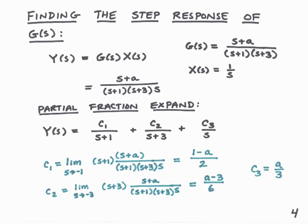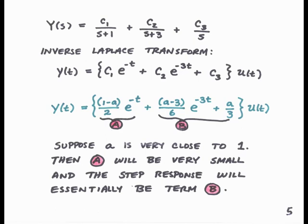We'll find c₁ = (1 − a)/2, c₂ = (a − 3)/6, and c₃ = a/3. Now that we've found the partial fraction expansion of Y(s), we'll take the inverse Laplace transform and find y(t) = c₁e^(−t) + c₂e^(−3t) + c₃, all times u(t). Plugging in the values for c₁, c₂, and c₃, you'll notice these coefficients depend upon the value of a.